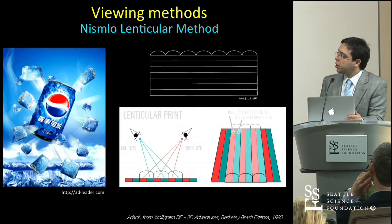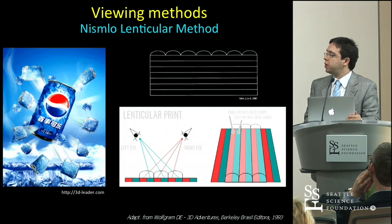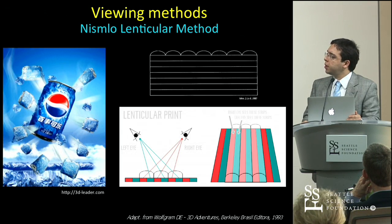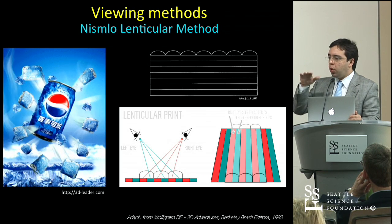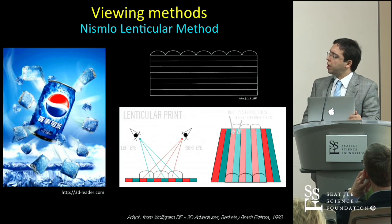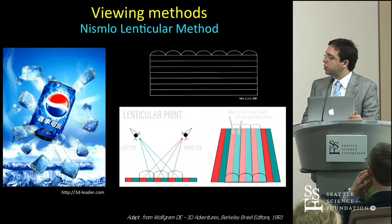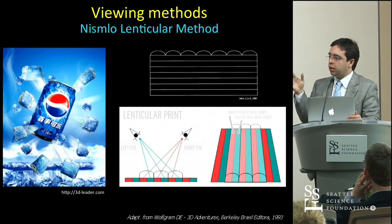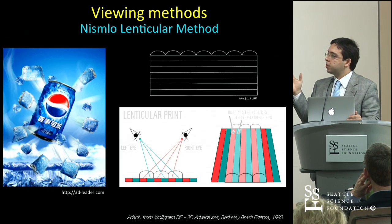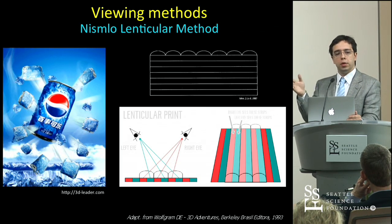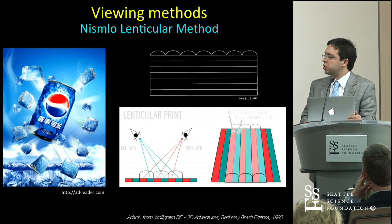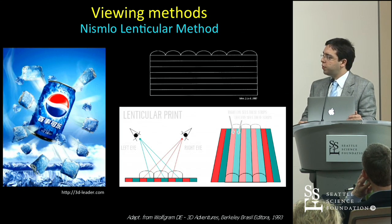Another interesting way of printing 3D is called the lenticular method. The 3D picture has small bumps on its surface. When you face it straight on, the left eye sees only the left half of the bumps and the right eye sees only the right half. Makers print the image accordingly so each eye sees a different image. It appears very nice and is used in large printed screens with backlighting, but it is only for printing and is not that cheap.